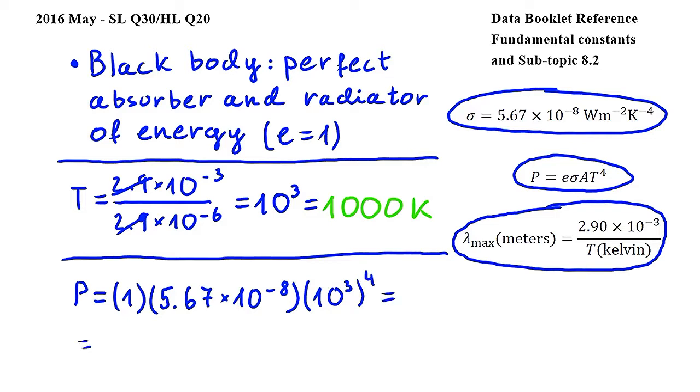Working further, we get 5.67 times 10 to the power of negative 8, times, and 10 to the power of 3 to the power of 4, we need to multiply the power, so 3 times 4, so I get 10 to the power of 12.